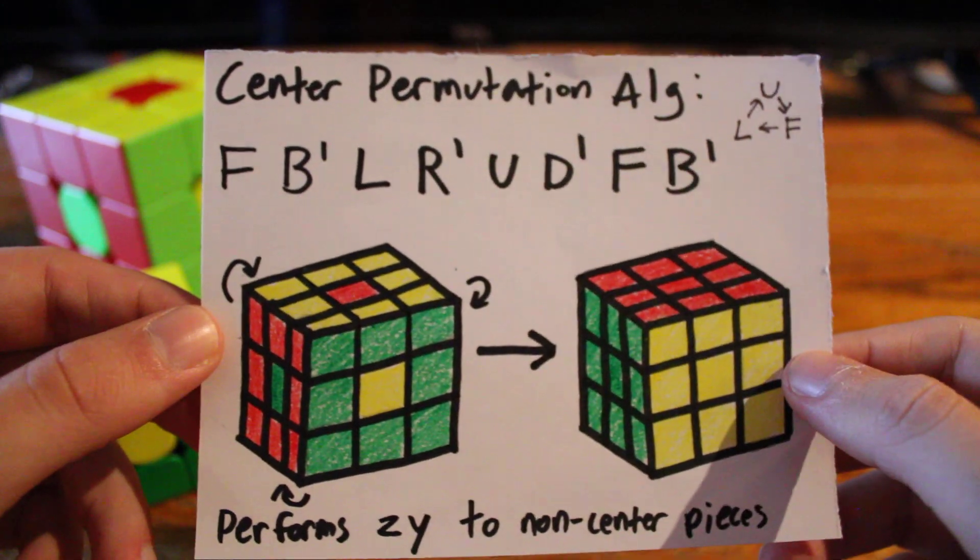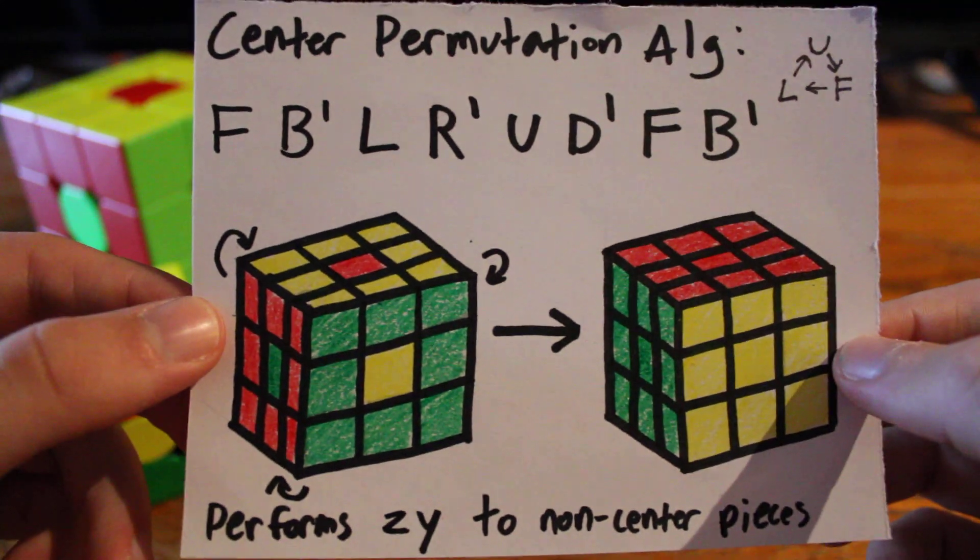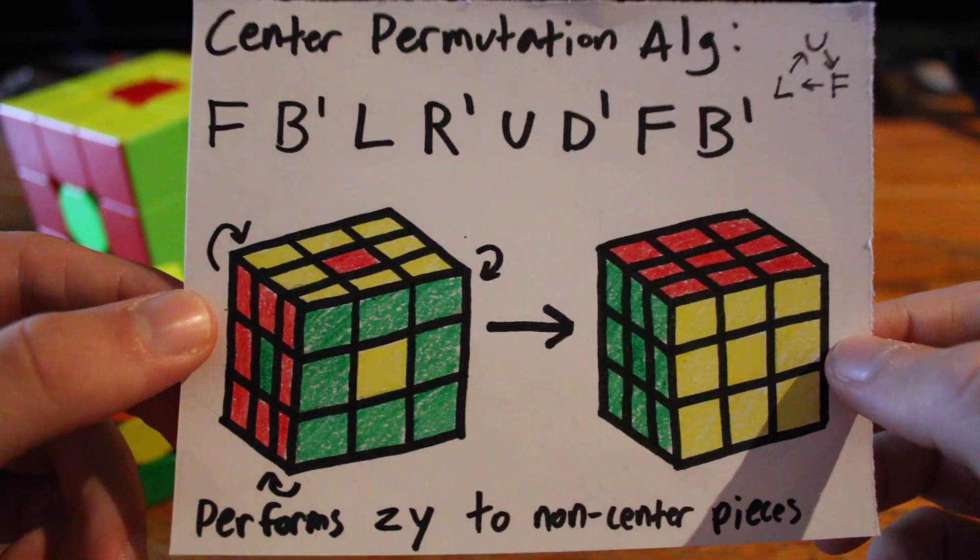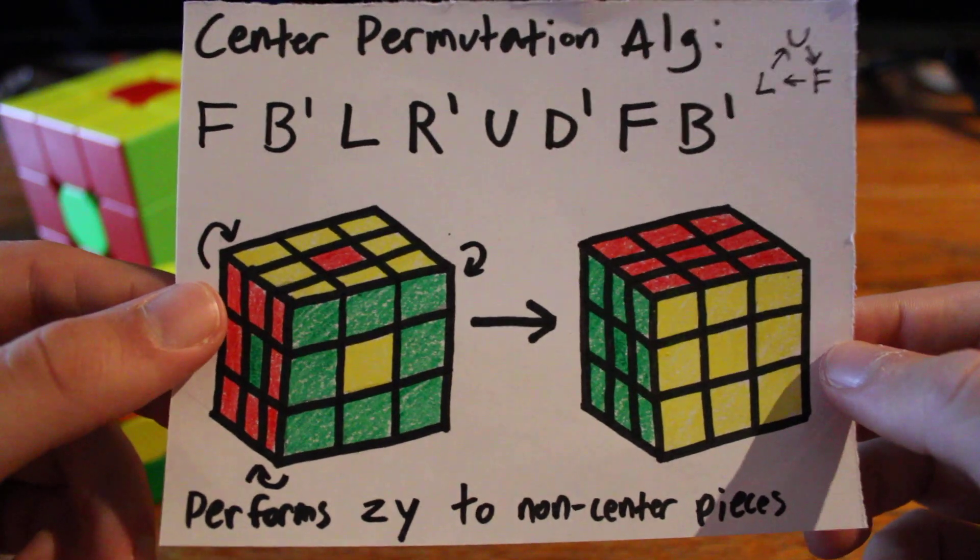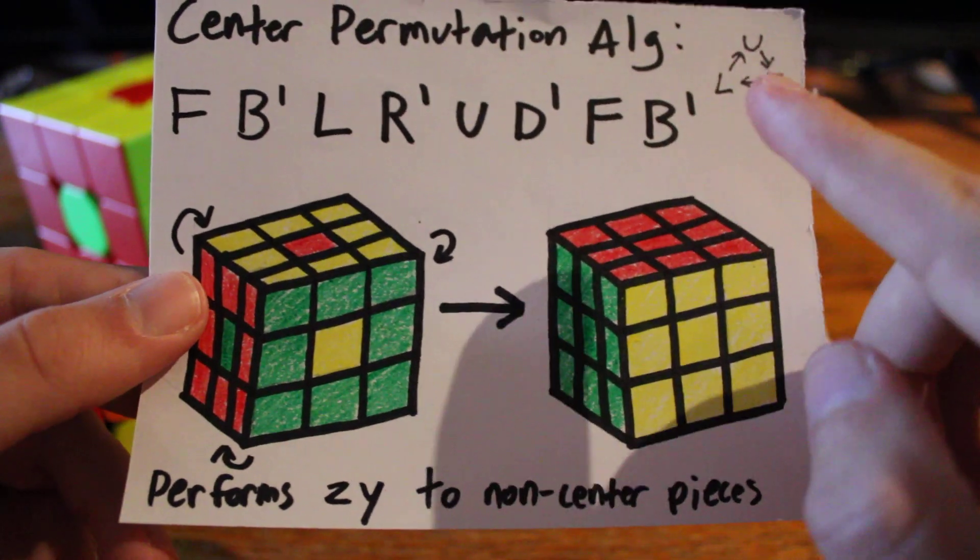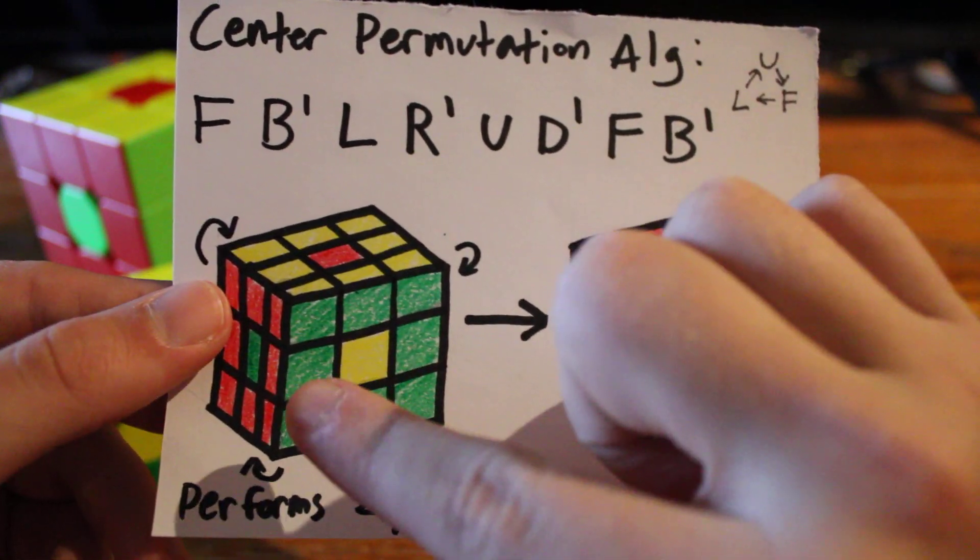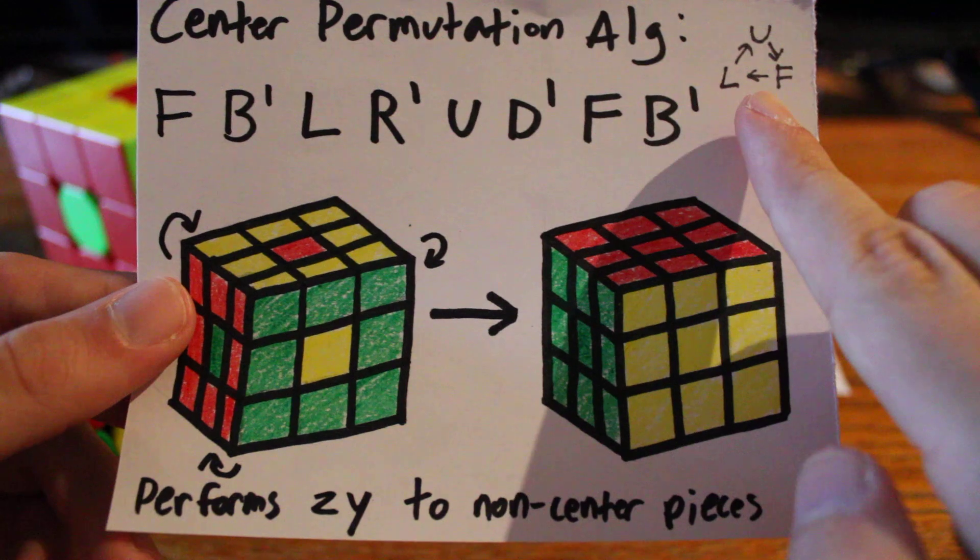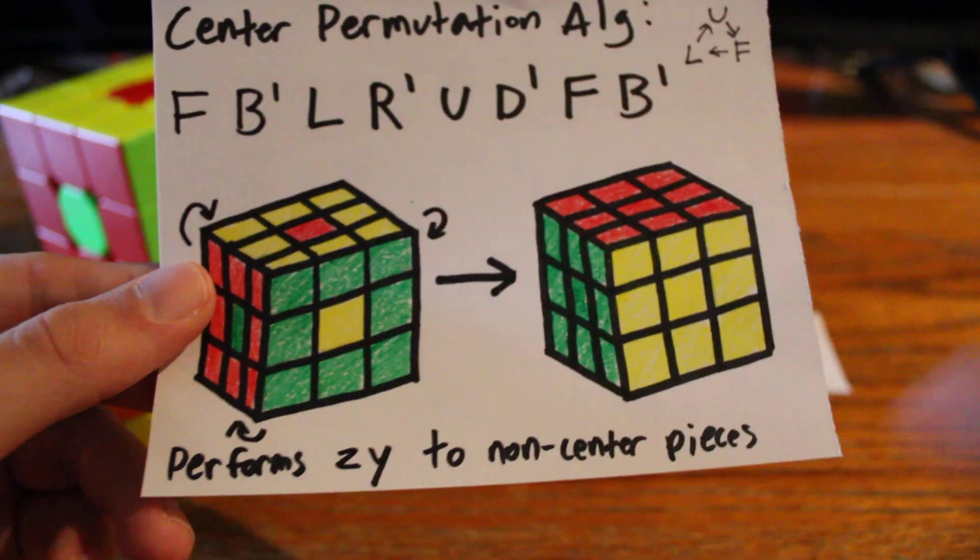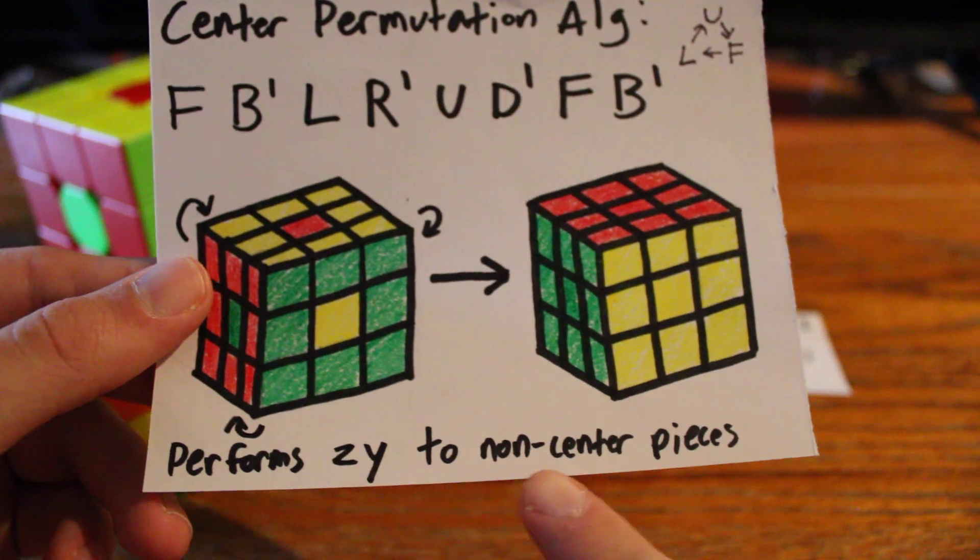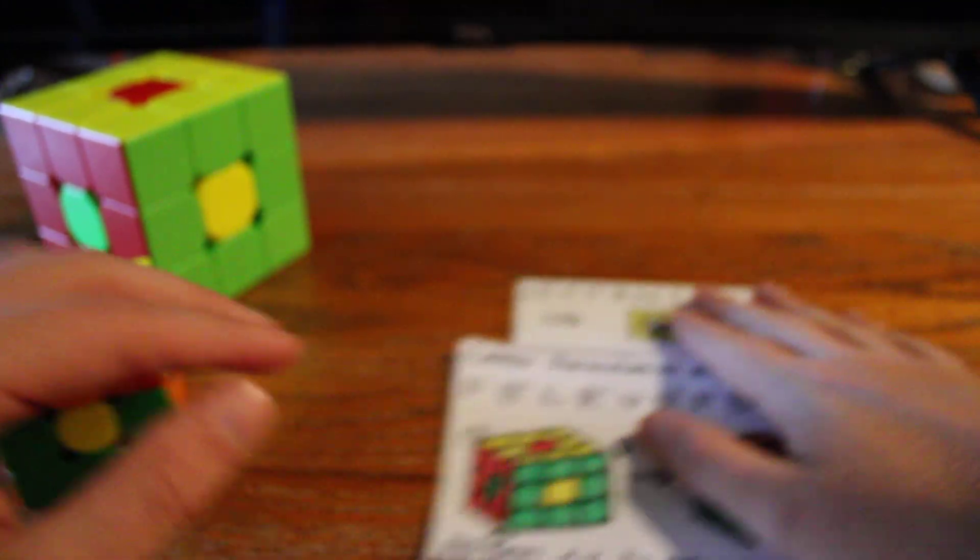And so, it's just going to be FB', LR', UD', FB'. Now, what that does is because it doesn't use any M, E, or S moves, the centers stay in place. All that moves are the pieces that go around it. And so, what it ends up doing is moving the U-side pieces to the F-side, the F-side pieces to the L-side, and the L-side pieces to the U-side, as denoted right here in this little mark right here. And another way you can think of it is that it actually performs a Z-Y to the non-center pieces while keeping the center pieces in place. So, these are the two algorithms I'm going to use.